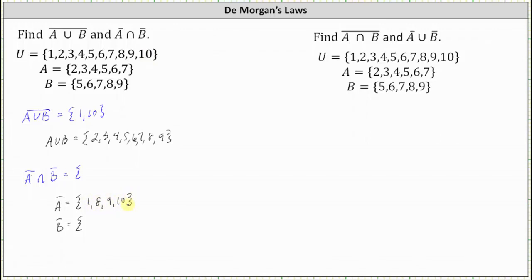Now let's determine B complement, which would be the set of elements that are not in B but in the universal set. Notice that B contains the elements {5, 6, 7, 8, 9}. Comparing this to the universal set, not B or B complement is the set containing the elements {1, 2, 3, 4, 10}.